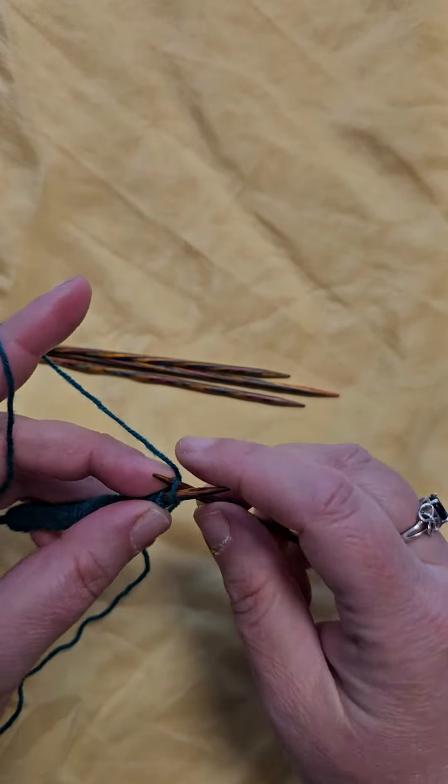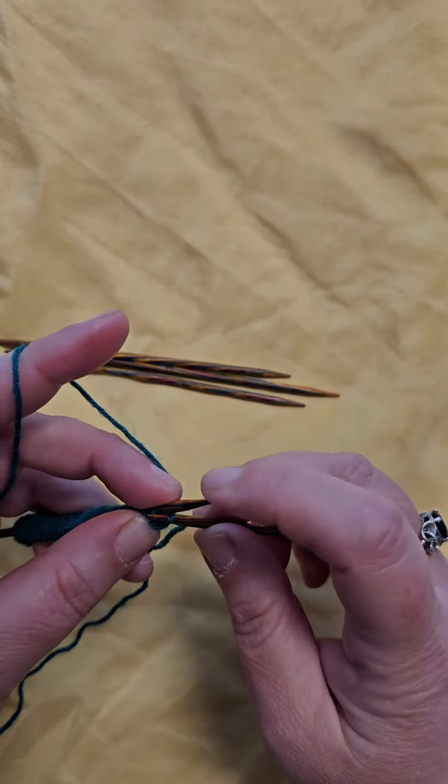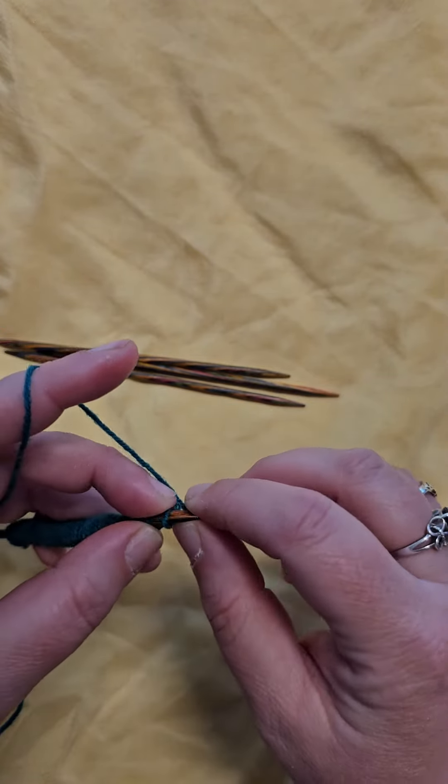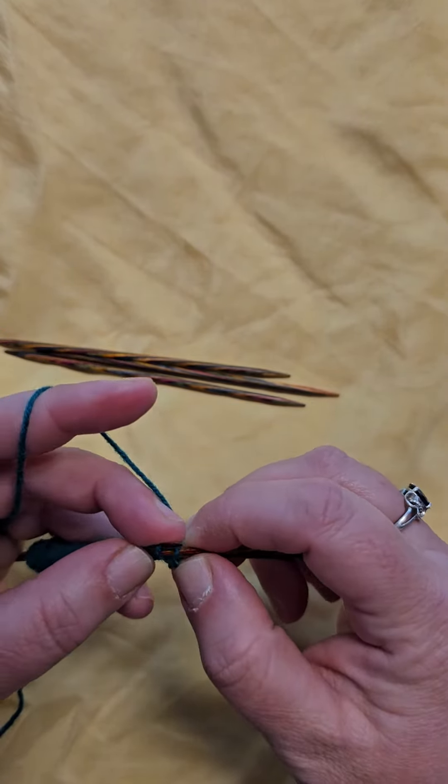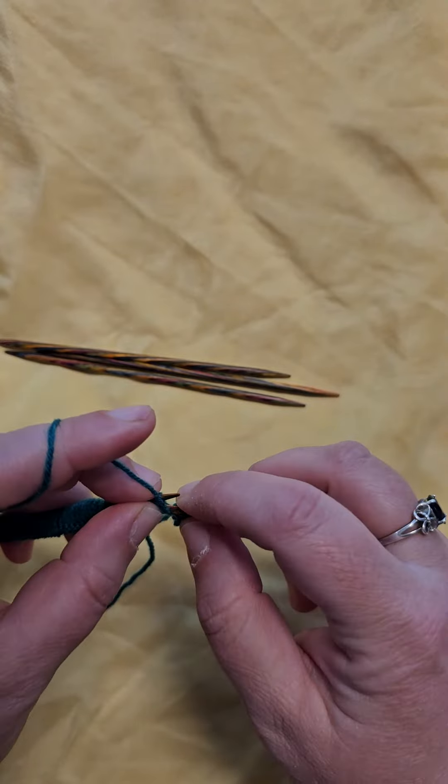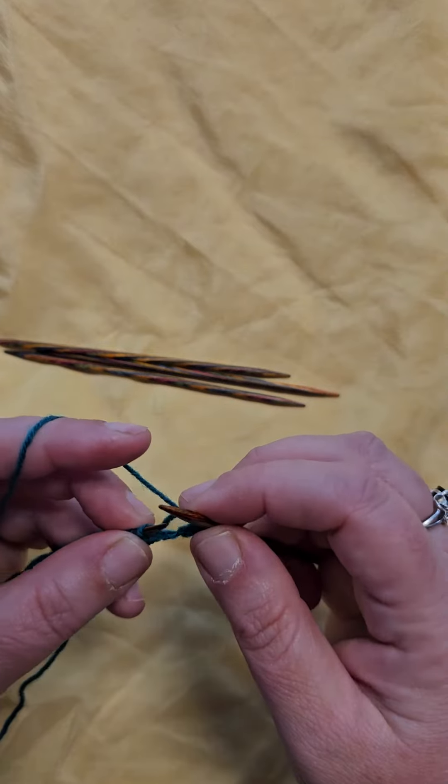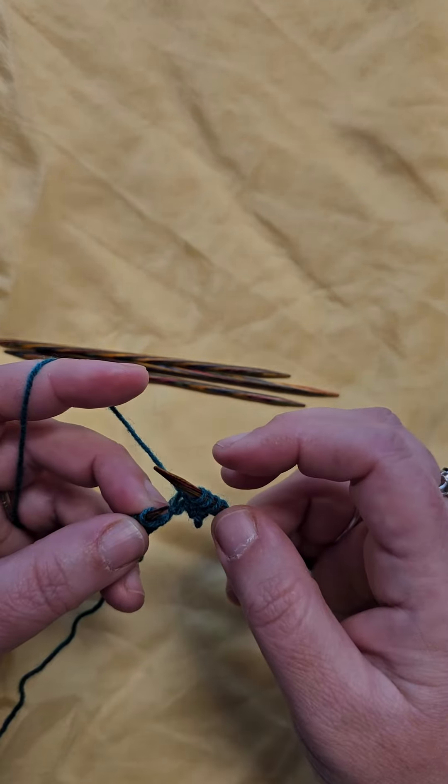You will knit two. This pattern has a 2-2 rib, knit two, purl two. Do that for ten stitches.